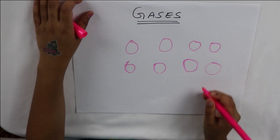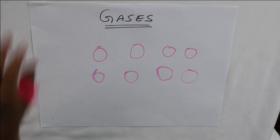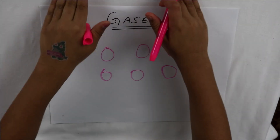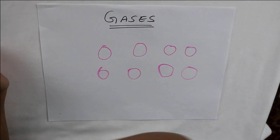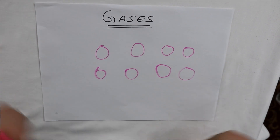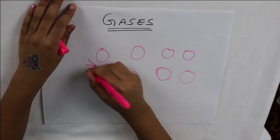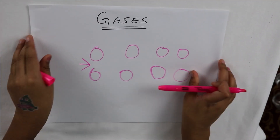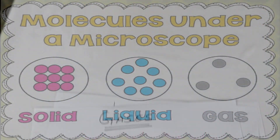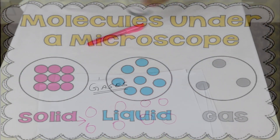You can't see gas, and it spreads all around the container it's in. Unlike liquids, it spreads all around the container, and if it's in no container it spreads all around and never stops. See how there's so much space between these molecules — that's what gas is.